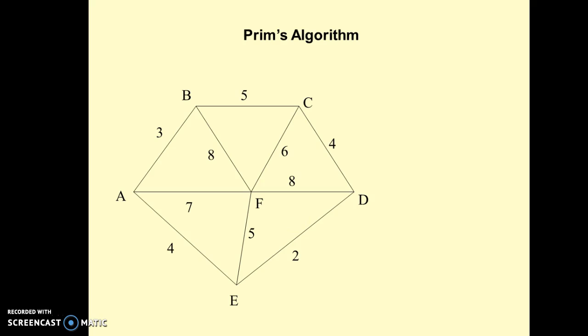Now we will calculate the minimum cost for this network by using Prim's algorithm. We select any vertex A. Now we will select the shortest edge connected to that vertex.